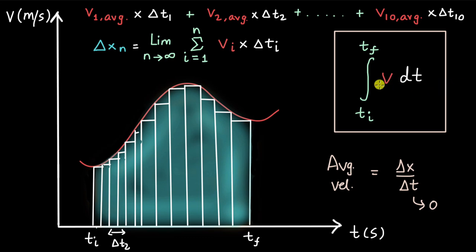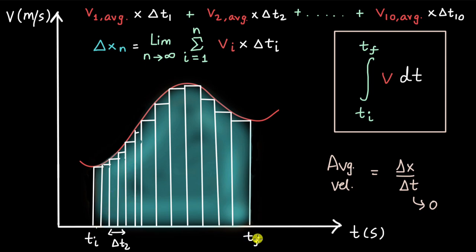We call it an integral, and the operator used to represent it looks like this elongated S symbol. This tells you the area under the VT graph from the limit T_I to T_F, where V is a function of time — it could be two T squared plus three, five T cubed plus four, or really any function of time. Whenever we see the integral of V dT between time limits, it means the area under the VT curve from T_I to T_F.